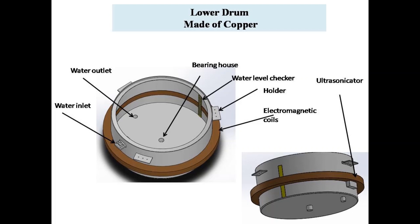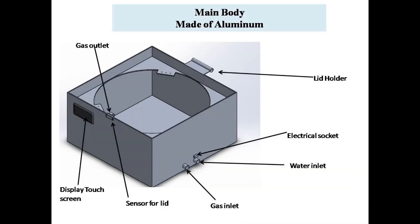The outer drum is made of copper. It has water inlet and outlet provisions and a bearing house where axle of inner drum can be fixed. The outer drum consists of sensors such as water level check and temperature sensor. It also consists of ultrasonicator which is used for ultrasonication.